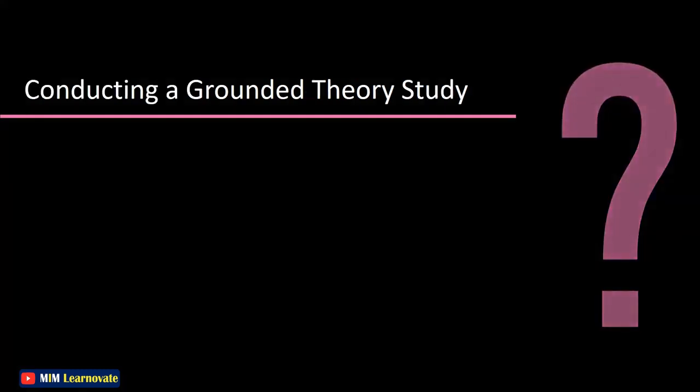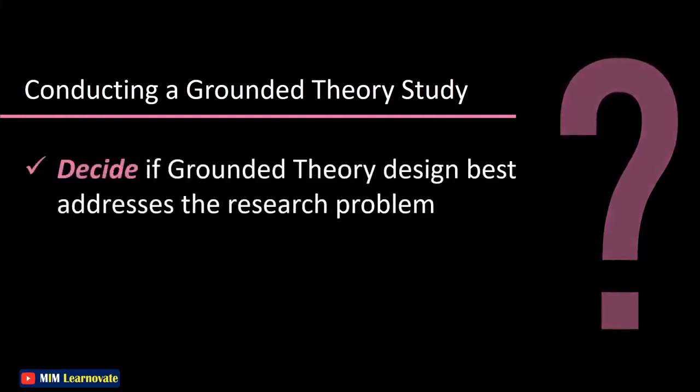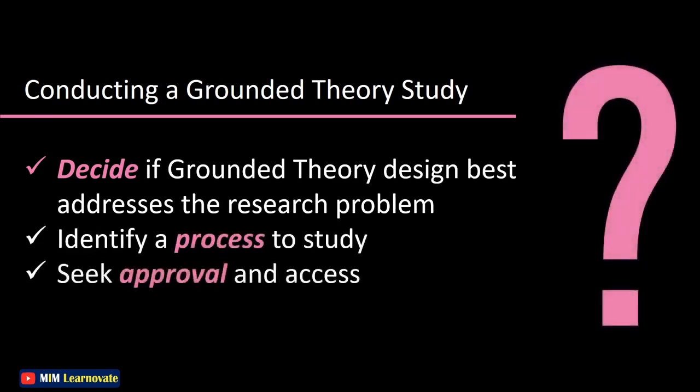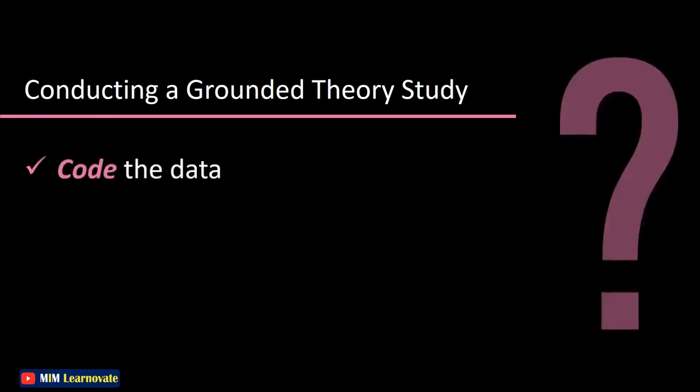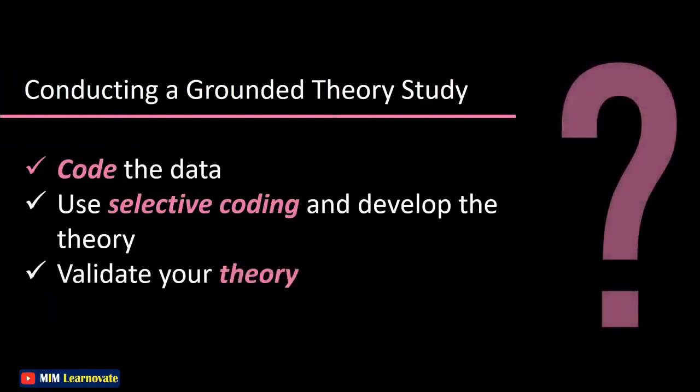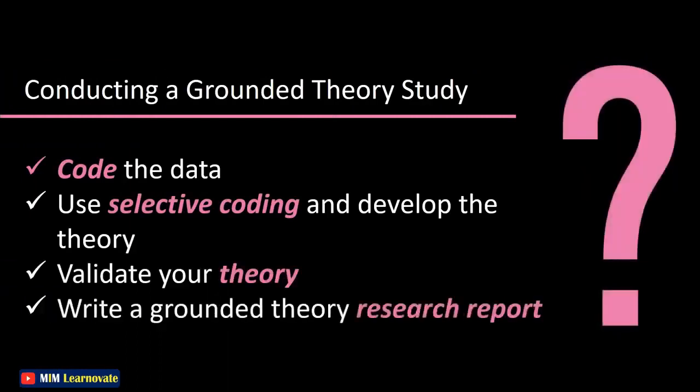Conducting a Grounded Theory Study: Decide if Grounded Theory design best addresses the research problem. Identify a process to study. Seek approval and access. Conduct theoretical sampling, code the data, use selective coding and develop the theory, validate your theory, write a Grounded Theory research report.